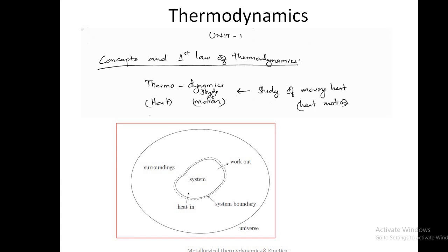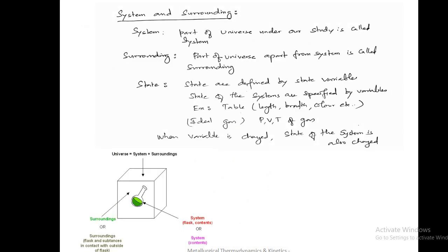Going to the first topic — what is your system and surroundings? If you consider what is a system: if you are living on Earth, the Earth is a part of the universe under study. For example, if you are in a classroom, one class is a system. Whenever heat is given to the system, a thermodynamic process will be used.